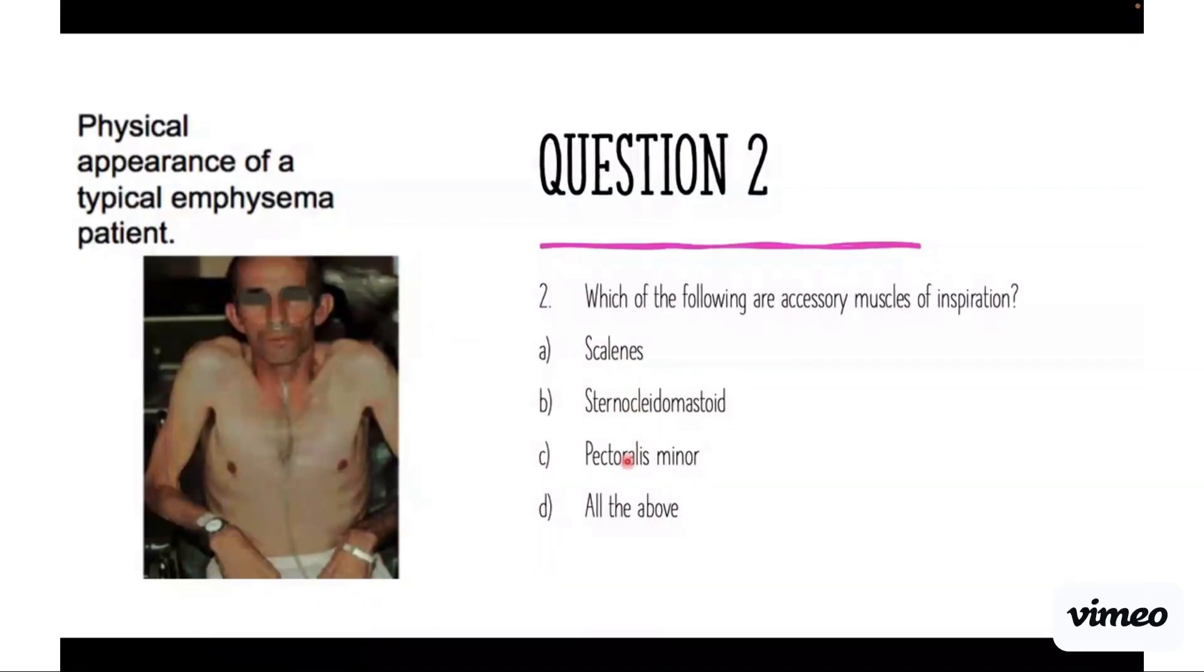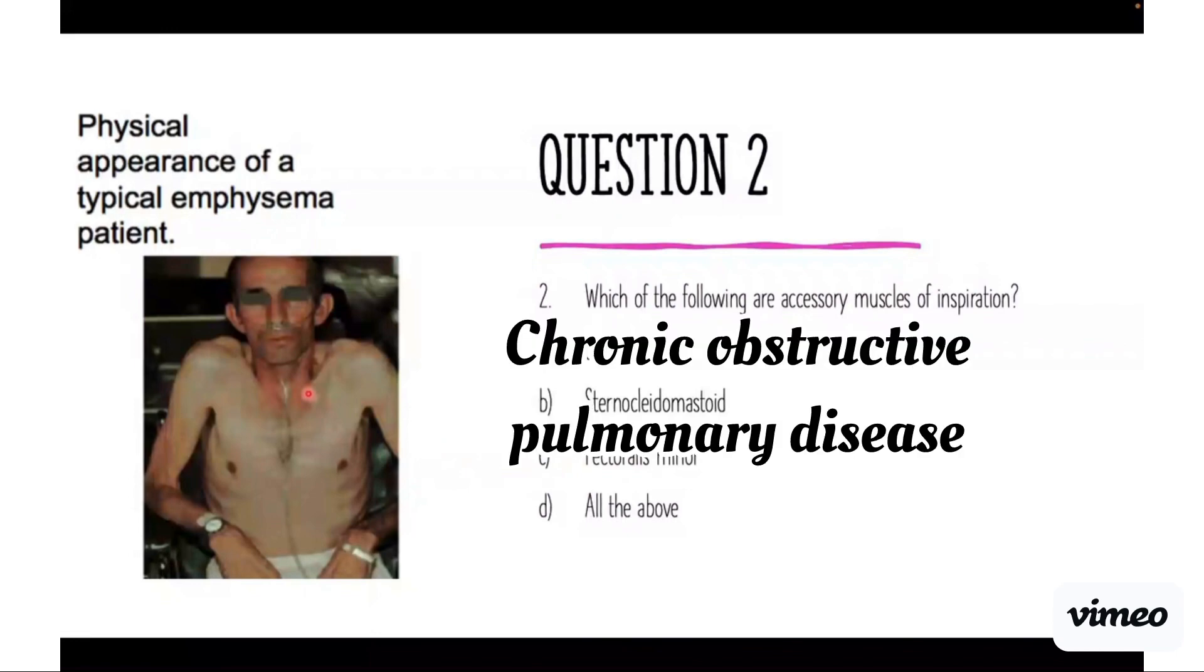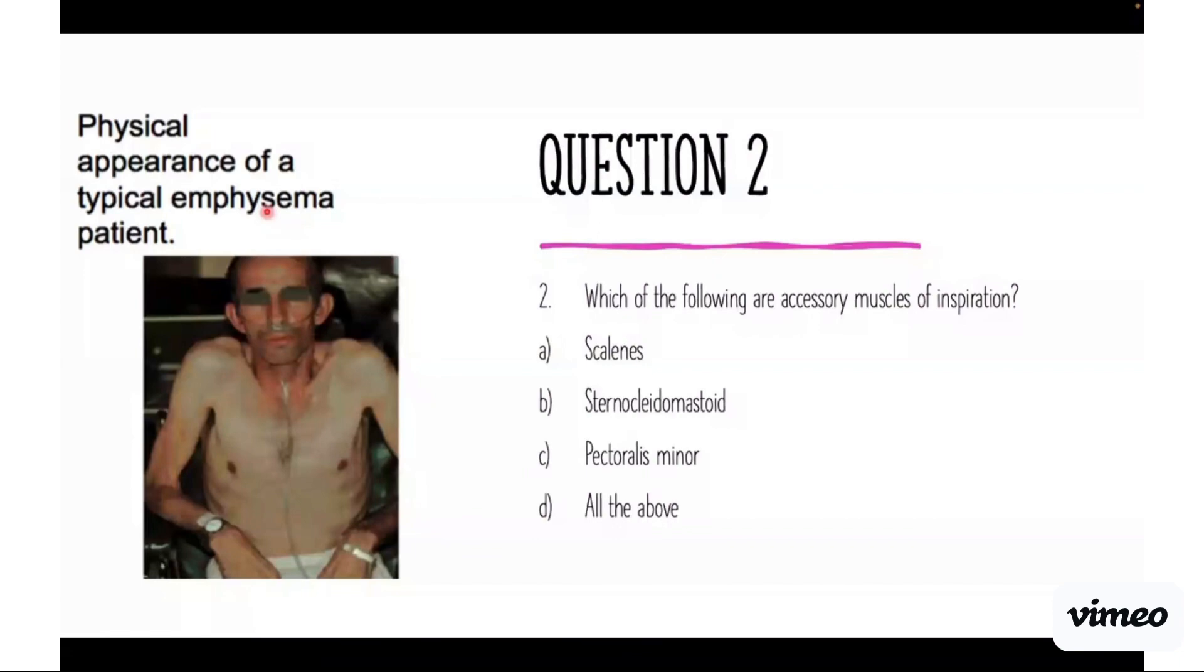This picture is a good example of someone with COPD—chronic obstructive pulmonary disease like emphysema—where the diaphragm just doesn't get enough air into their lungs. So they have to use these accessory muscles all the time, and you can see how hypertrophied or enlarged his sternocleidomastoid muscles are. If we were to look at his scalenes and his pec minor, I'm sure those are also hypertrophied.